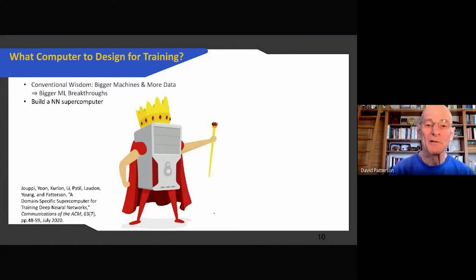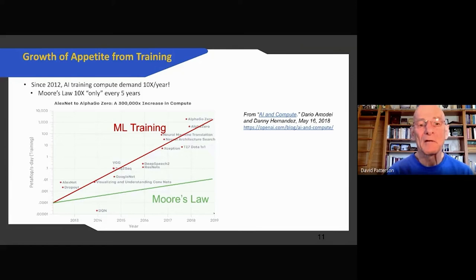And in retrospect that was a great decision. Here's a result from our colleagues at OpenAI just showing the thirst for machine learning training. If you wanted to stay at the state of the art, they calculated going back to 2012 up through 2019, the appetite is 10x per year, whereas Moore's Law, when it was at full speed, was 10x every five years. So dramatically faster appetite for training at the very state of the art.